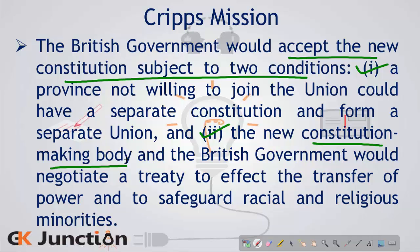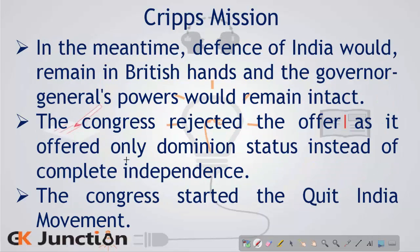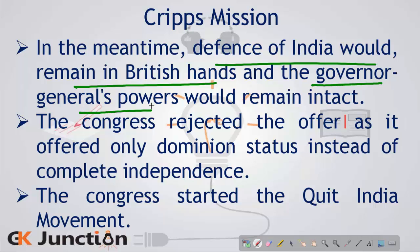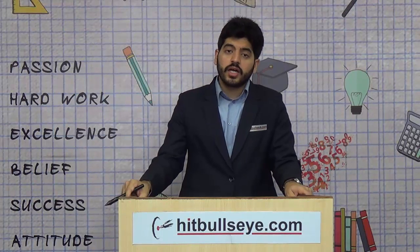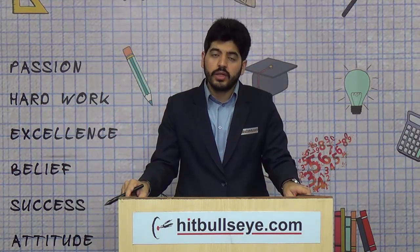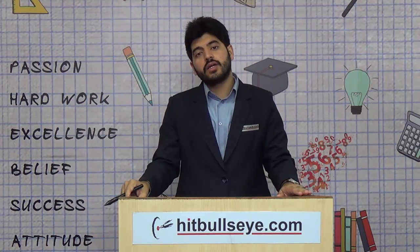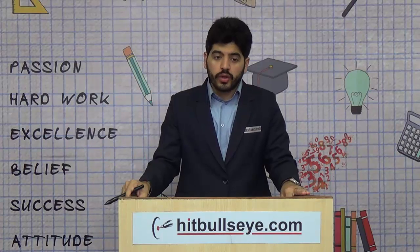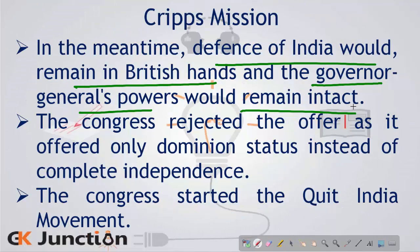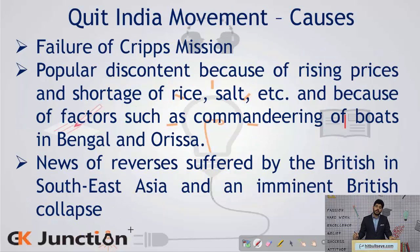So 'mainly' versus 'solely' is the differentiating point between the August Offer and the Cripps Mission. The Cripps Mission also provided that defense of India would remain in British hands and the Governor General's powers would remain intact. Congress, again dissatisfied with provisions such as dominion status rather than complete independence or Poorna Swaraj, rejected the Cripps Mission. To show its rejection, Congress started the Quit India Movement.